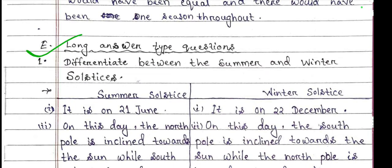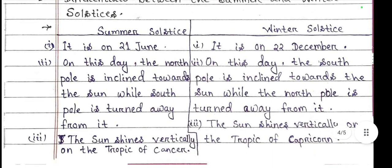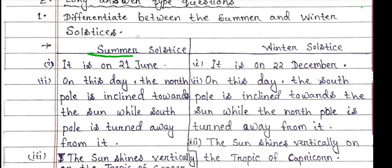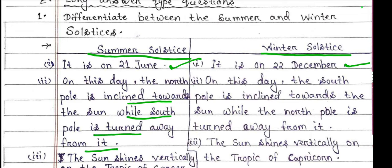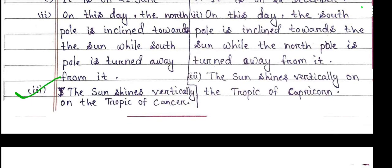Long answer type question: Differentiate between the summer and winter solstices. Summer solstice falls on June 21 and 22 — on this day the North Pole is inclined towards the Sun while the South Pole is turned away from it. Winter solstice: on this day the South Pole is inclined towards the Sun while the North Pole is turned away from it. During summer solstice the Sun shines vertically on the Tropic of Cancer; during winter solstice the Sun shines vertically on the Tropic of Capricorn.